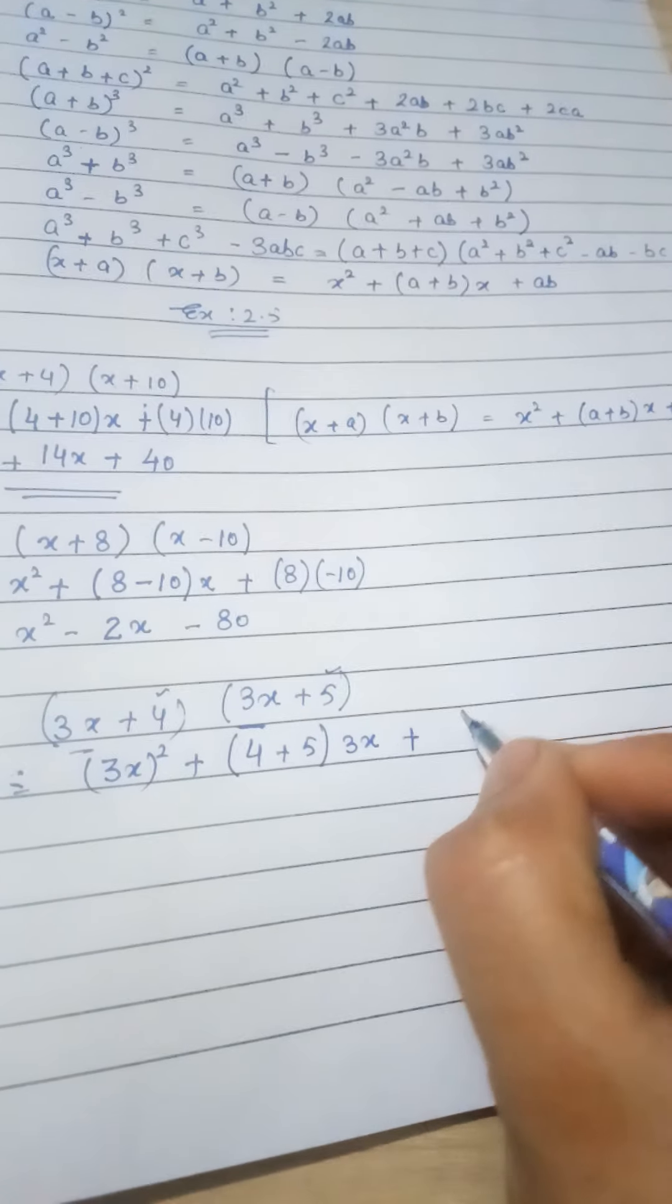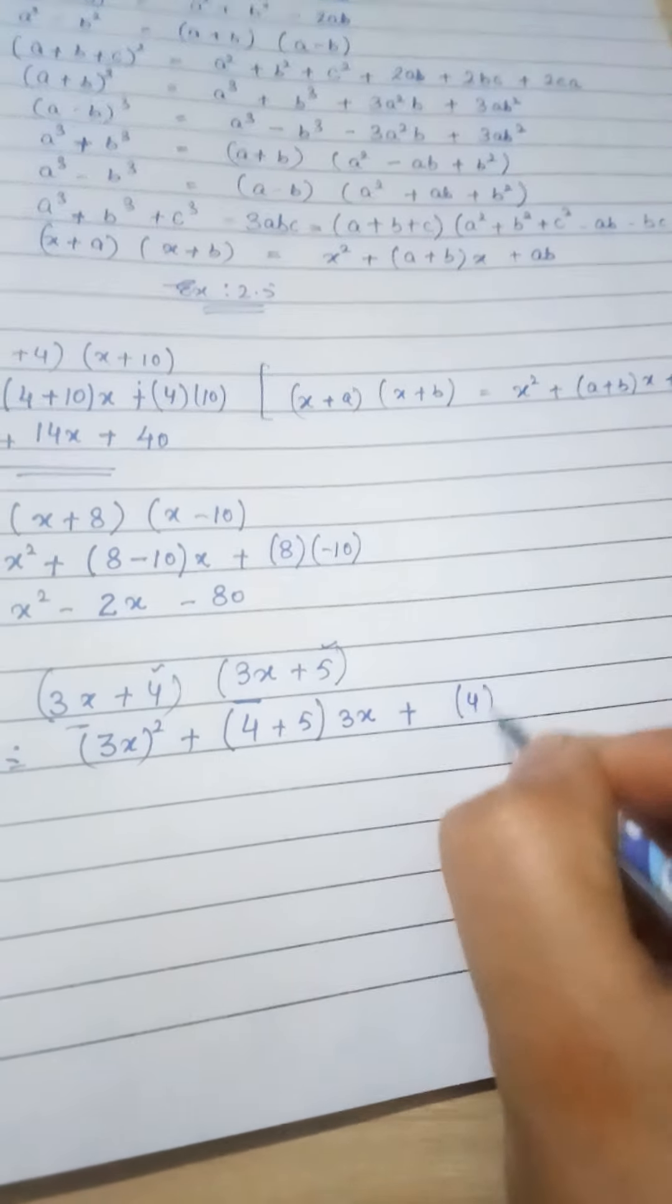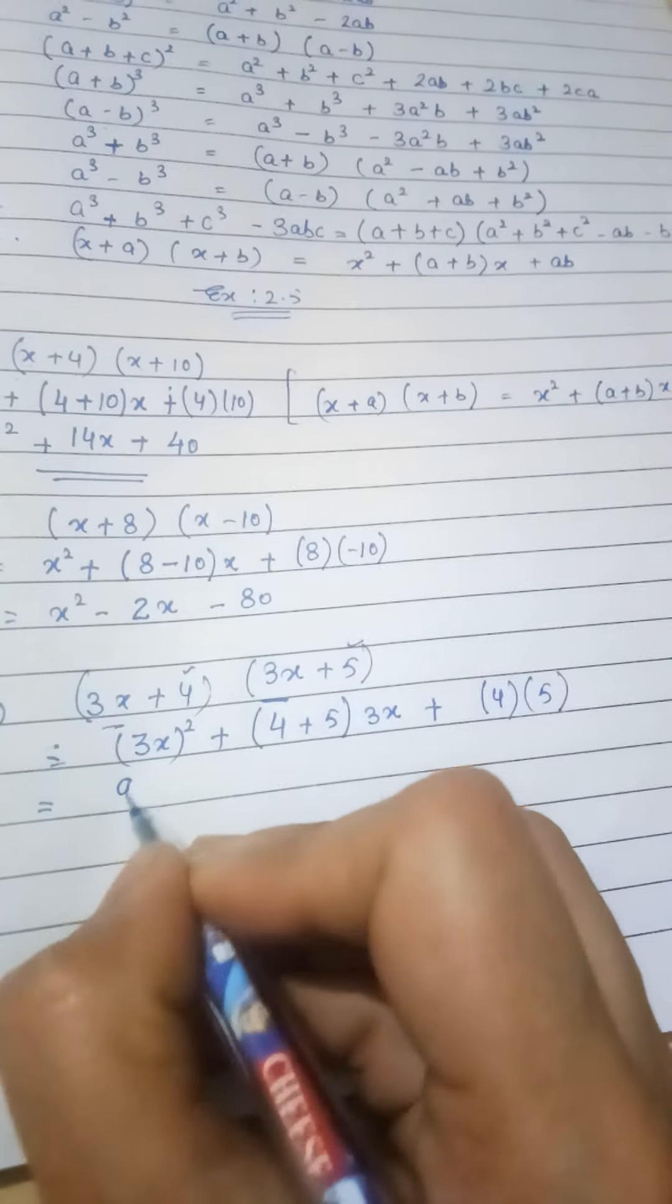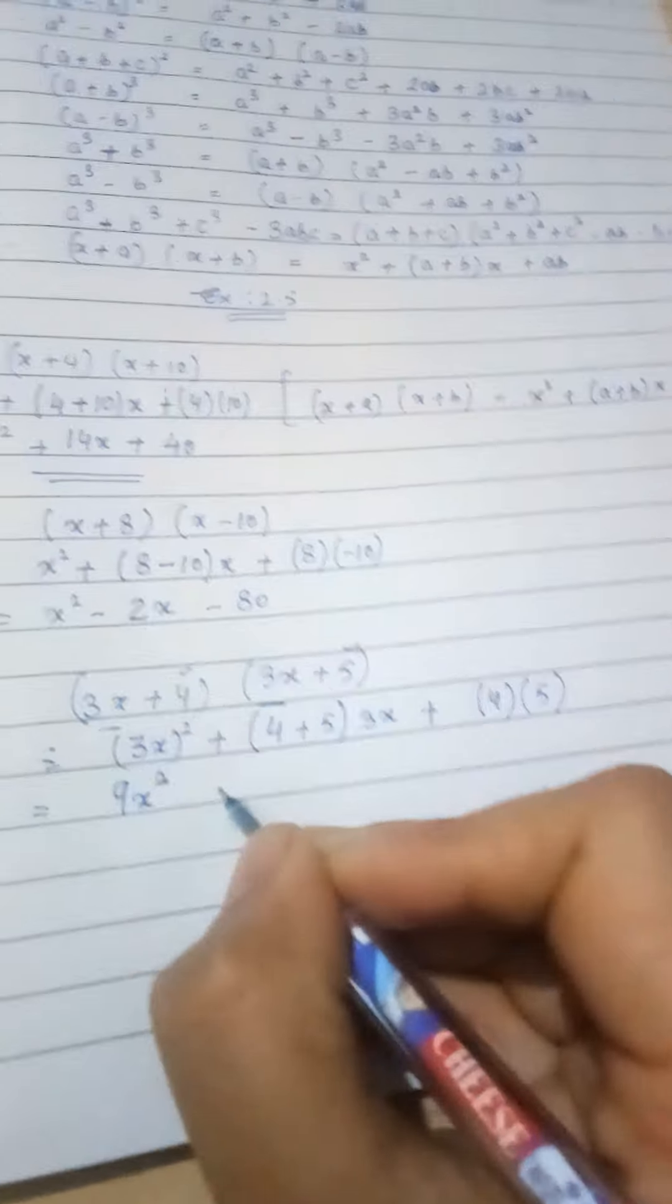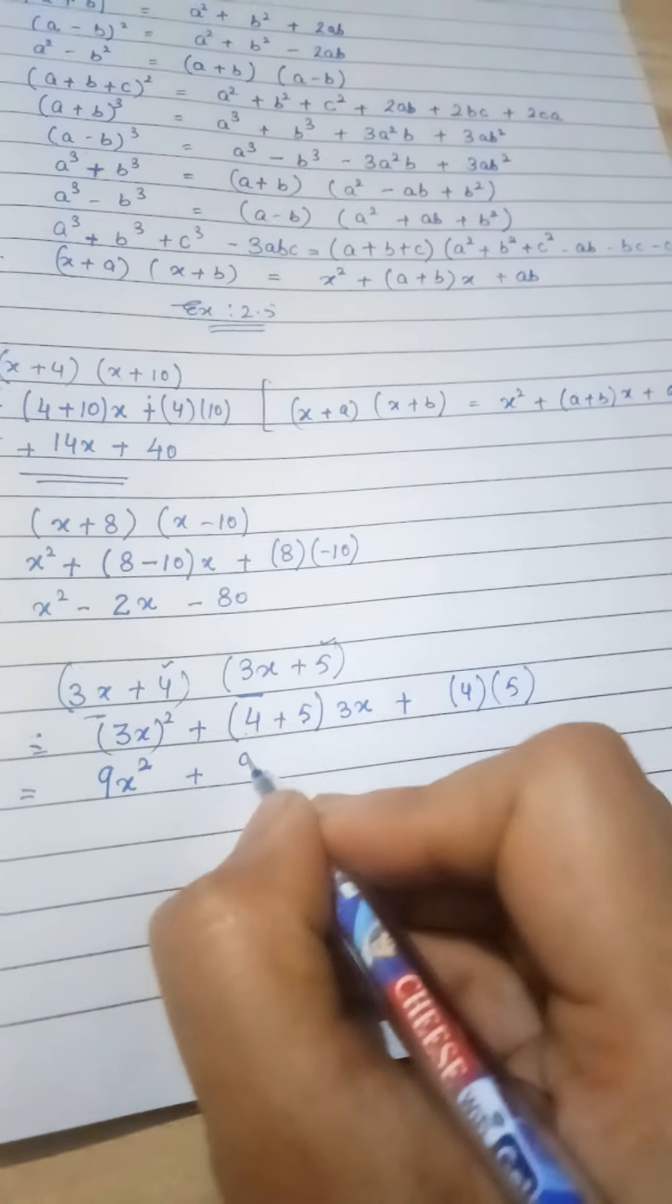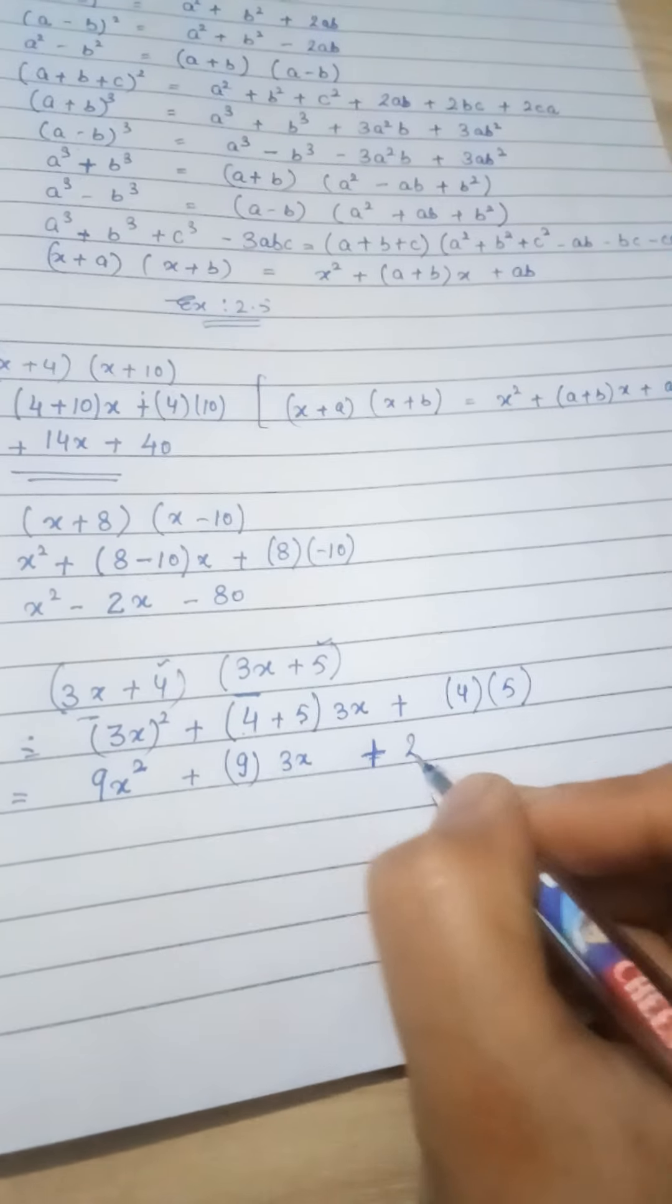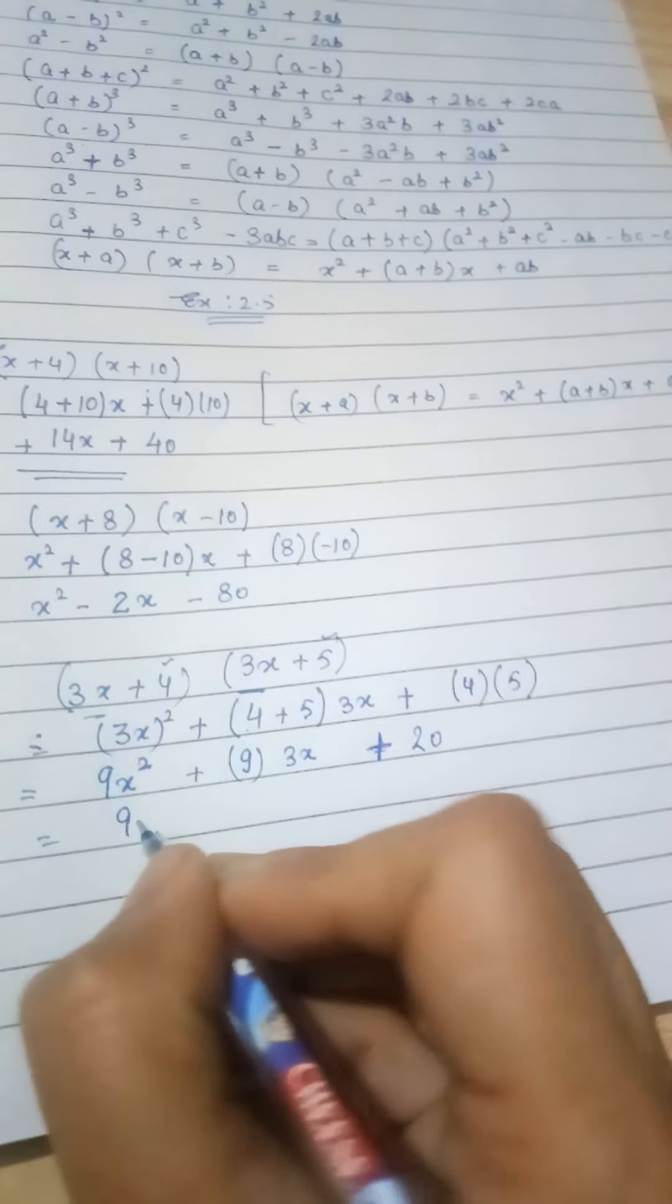So we have 4 plus 5 times 3x. Now we have the term ab, 4 into 5. All right, now solving the parts, 3 times 3 is 9x squared.